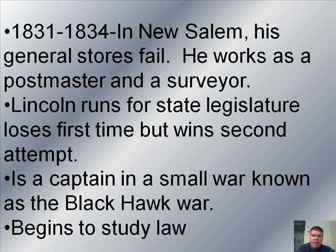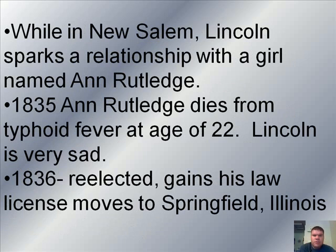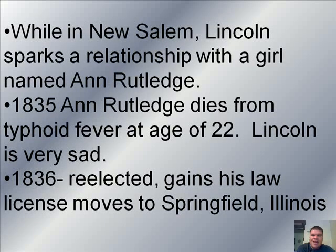He also begins to study law at this point, wanting to become a lawyer, so he starts reading all the law books he can get his hands on. While he's in New Salem, he sparks a relationship with a girl named Ann Rutledge. We don't know a whole lot about this relationship, but we do know there was some type of relationship there. In 1835, Ann Rutledge dies from typhoid fever at the age of 22 — very young — and Lincoln is very sad about this.